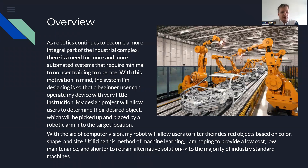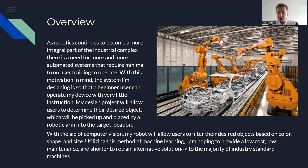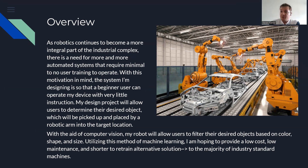My design project will allow users to determine their desired objects, which will then be picked up and placed by the robotic arm into the target location. With the aid of computer vision, my robotic arm will allow users to filter their desired objects based on color, shape, and size. In utilizing this method of machine learning, I'm hoping to provide a low cost, low maintenance, and shorter-to-retrain alternate solution to the majority of our industrial standard machines.